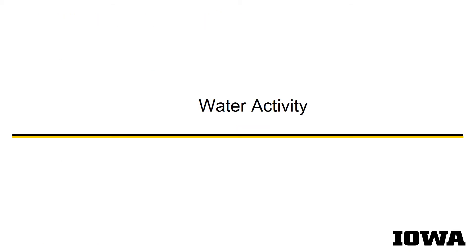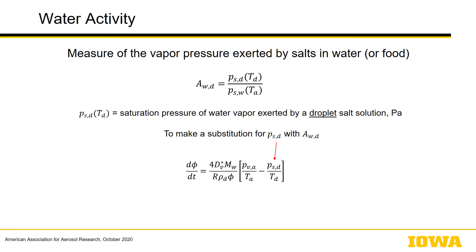Returning to water activity and its model: water activity is fairly simply related to the vapor pressure exerted by the droplet relative to that of the ambient atmosphere, and we can see how it substitutes into the Maxwell equation. Note that here we use A_w comma d, which is the water activity of the curved droplet, whereas water activity has always been measured from a flat surface. The previous model uses A_w and I won't detail here how that transformation was made.